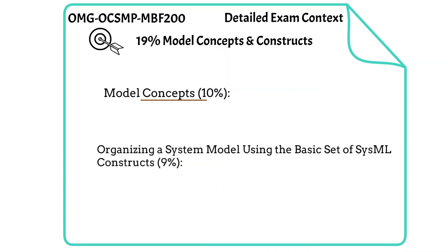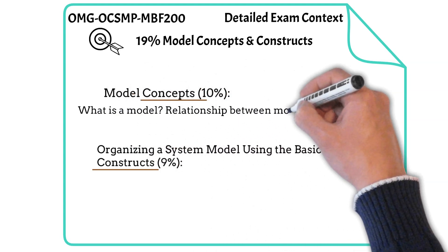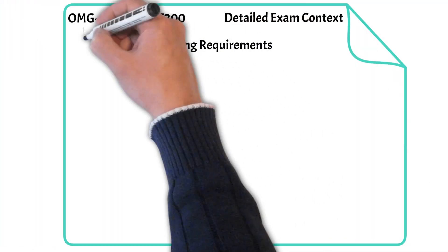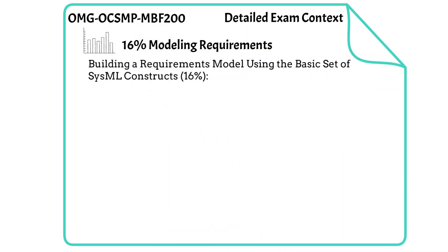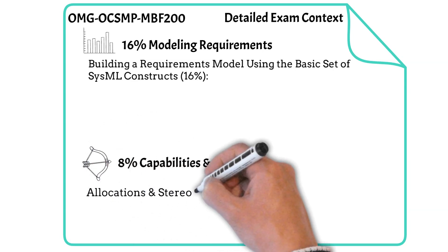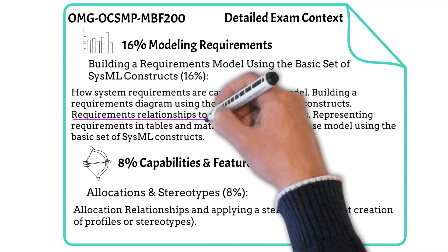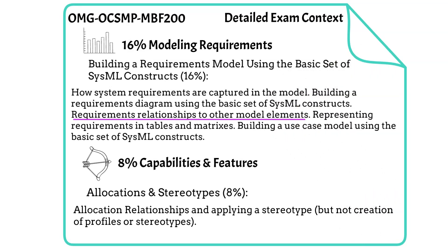For modeling concepts and constructs: 10% is modeling concepts and 9% is modeling constructs. Remember that a diagram is a view or perspective of the model. You use the package diagram to decompose the model structure, while the block definition diagram decomposes the system of interest. For the 16% requirements modeling section, focus on the relationships — refine, verify, satisfy, and trace — and what model elements those relationships connect. Also study how and when to apply stereotypes.